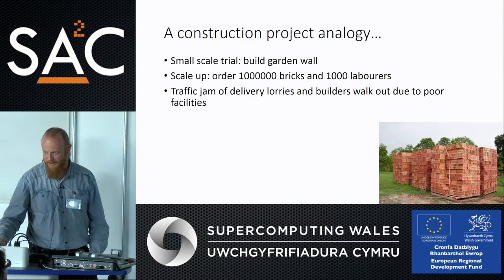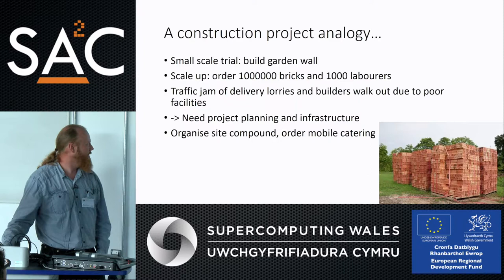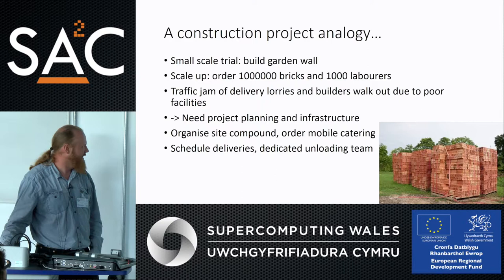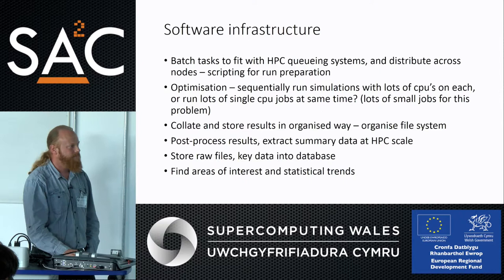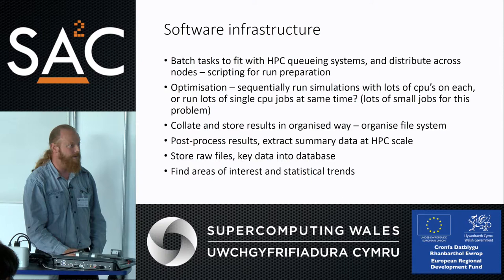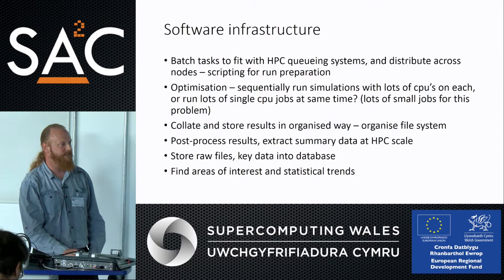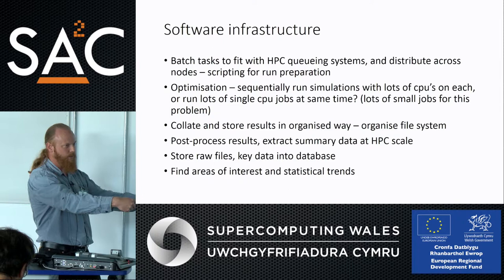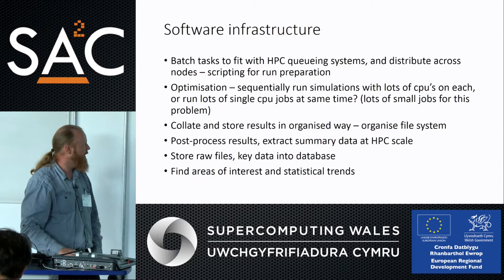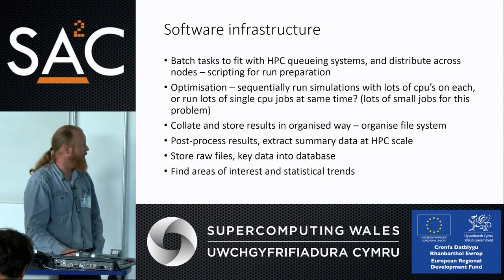You need to handle all that data in and out — organize a site compound, schedule deliveries, and have dedicated teams for parts of the work. The same software infrastructure is needed for this kind of problem: scripts to batch up problems, create arrays of input files, split them into sections that can be submitted to an HPC queue in an orderly way, and optimize whether you run them as wider jobs across several CPU nodes very quickly sequentially or as single-CPU jobs run many in parallel. For the particular code we're running, many in parallel tends to be preferred.